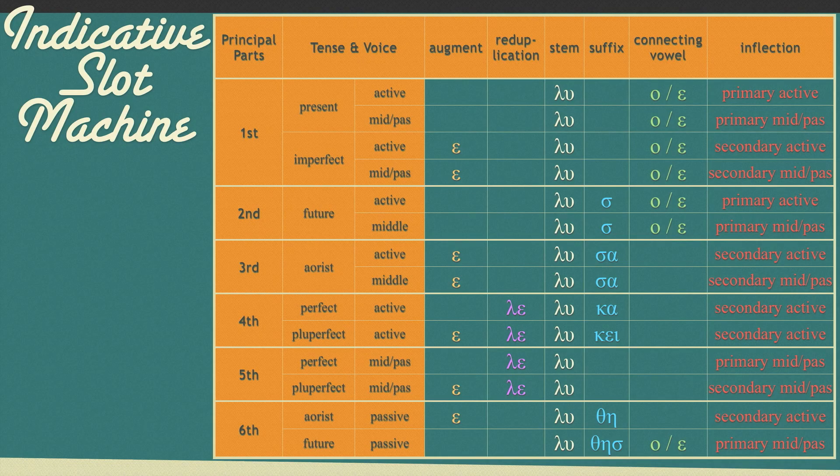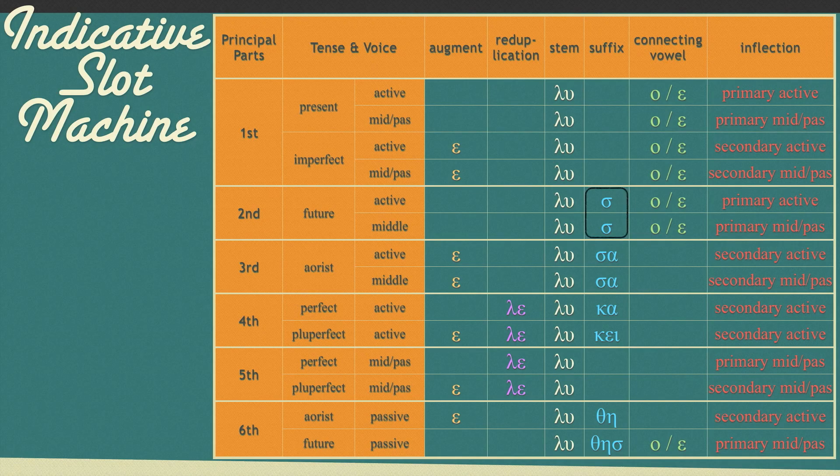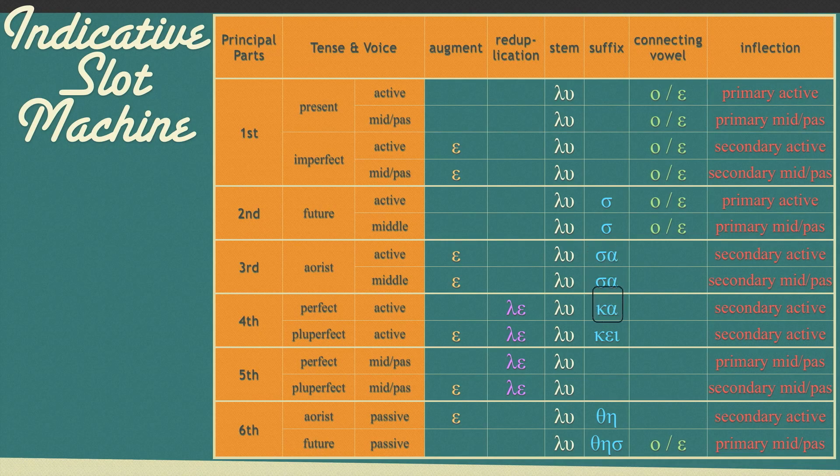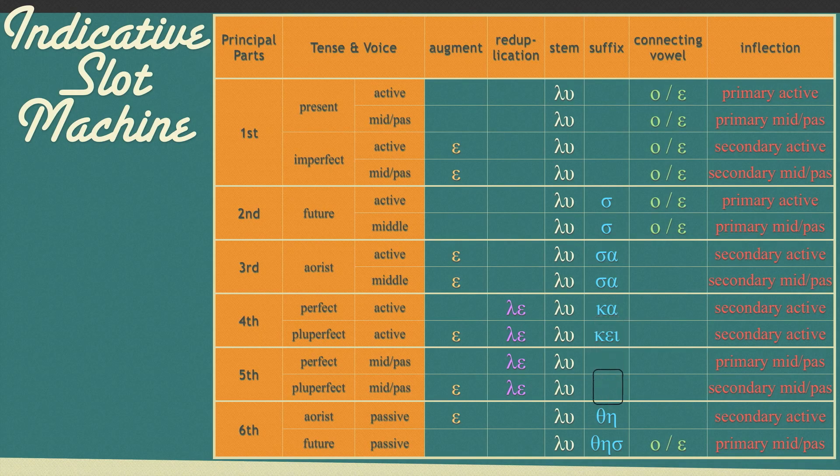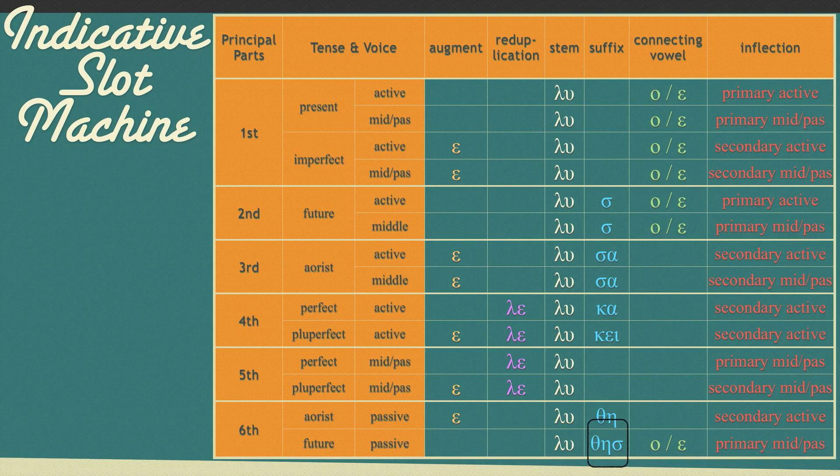Numerous tenses also have a suffix in slot 4. Future active and middle have a sigma. Aorist active and middle have sigma alpha. Perfect active has kappa alpha. Pluperfect active has kappa epsilon iota. Aorist passive has theta eta. And future passive has theta eta sigma.